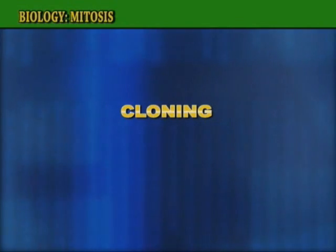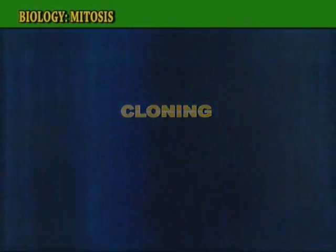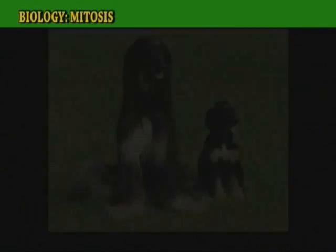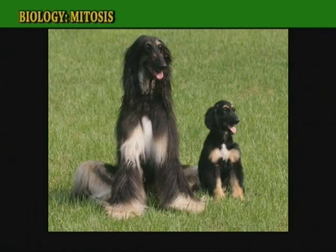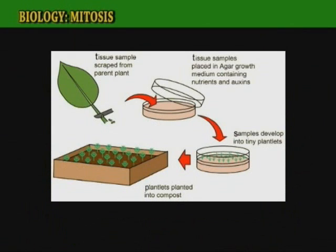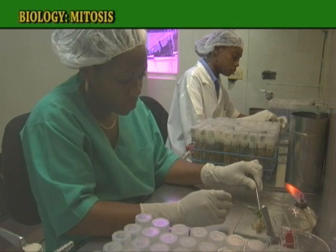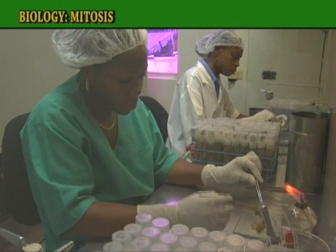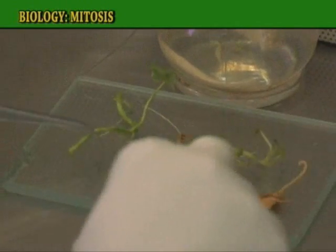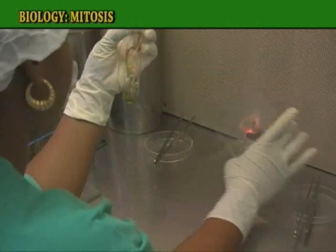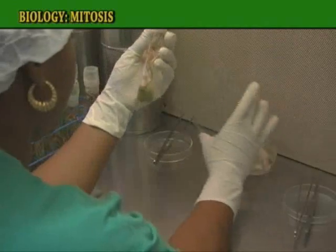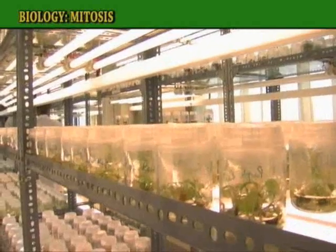Cloning is the production of many genetically identical copies of an individual by asexual reproduction. Plants are usually easier to clone than animals. Cloning is done especially in agriculture, where there is a plant with favorable characteristics. Through cloning, a large number of that same plant can be made.